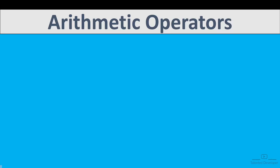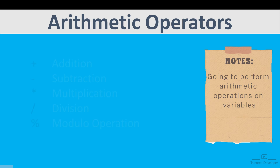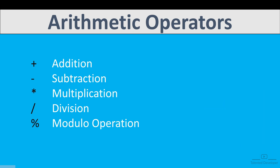Welcome back. In this video, we are going to learn about arithmetic operators. Arithmetic operators mean we are going to perform some kind of arithmetic operation on variables. Arithmetic operations include addition, subtraction, multiplication, division, and modulus. We'll use variables and try to perform these kinds of operations. Let's start the code.